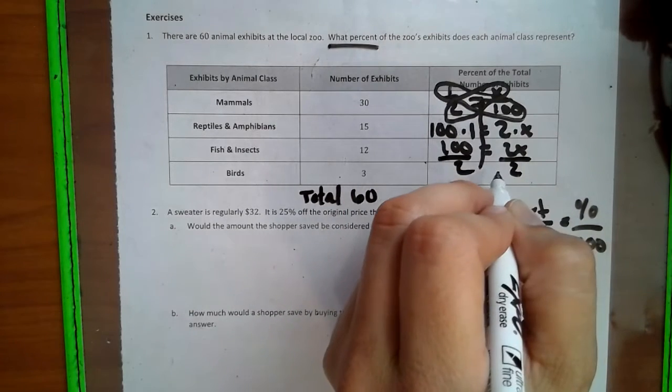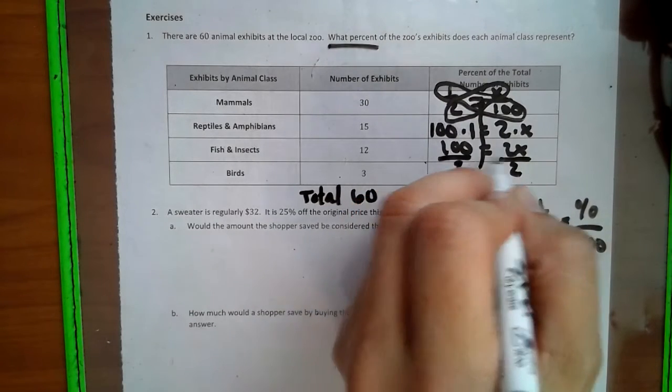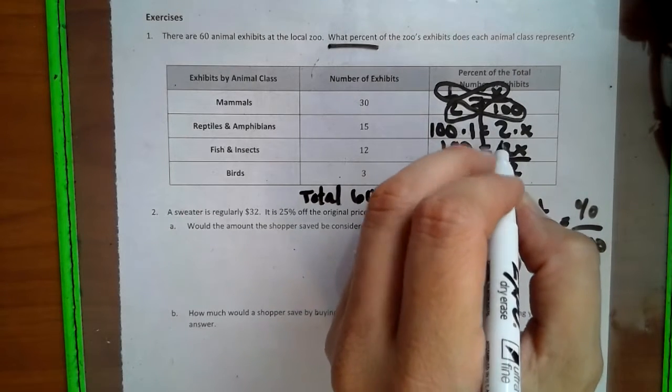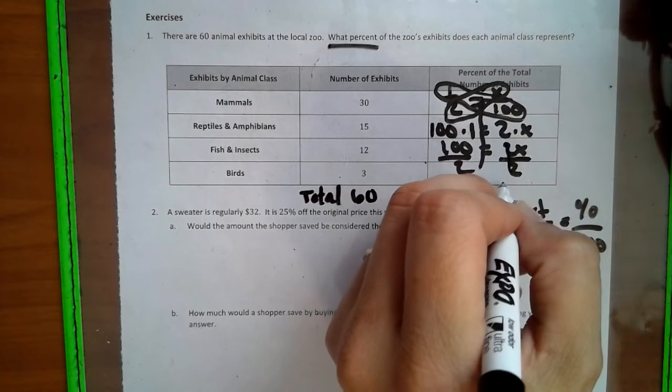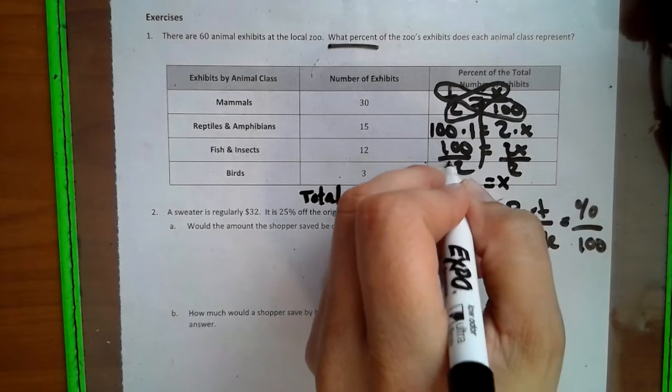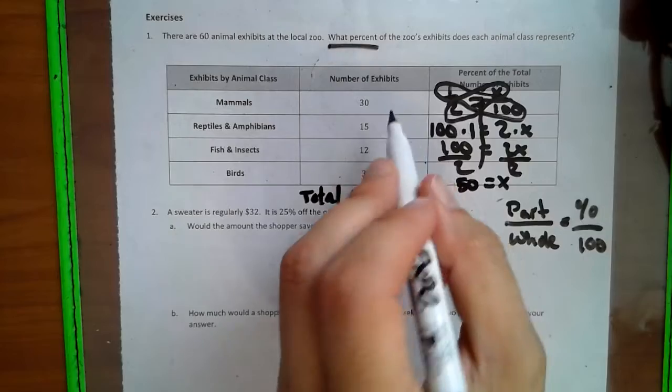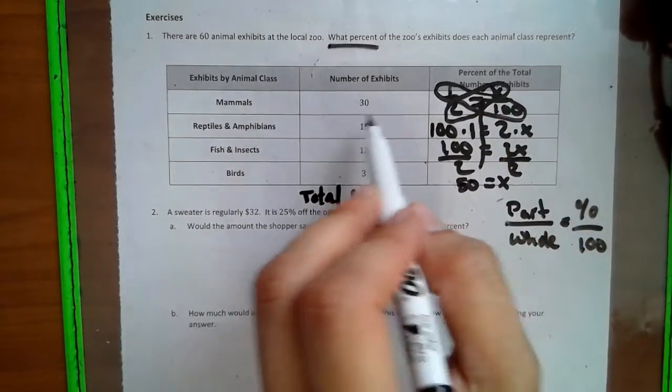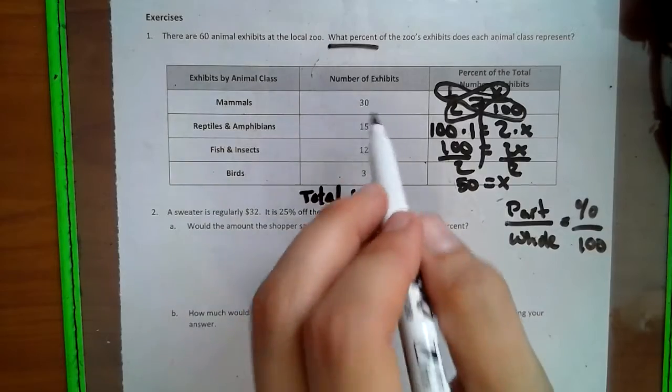This fraction bar means division. So you'll see me put that a lot. That just means 2x divided by 2. That's all a fraction is. A fraction is nothing more than a division problem. We cross out those. We get x equals 100 divided by 2, which is 50.